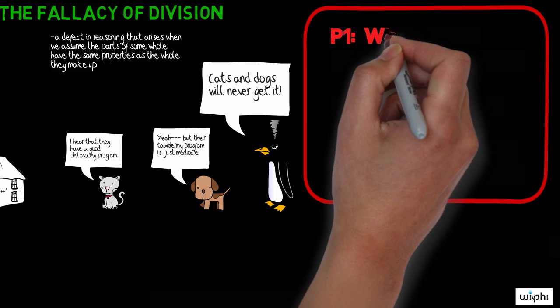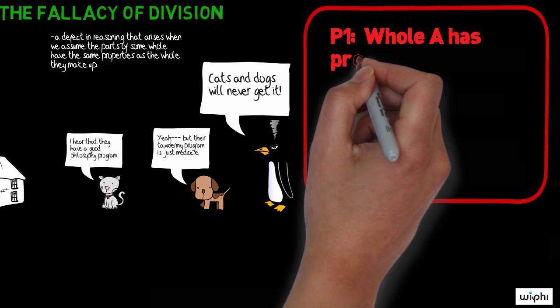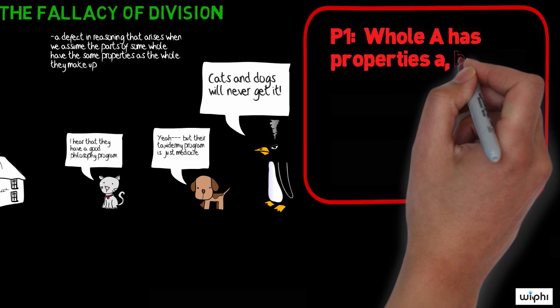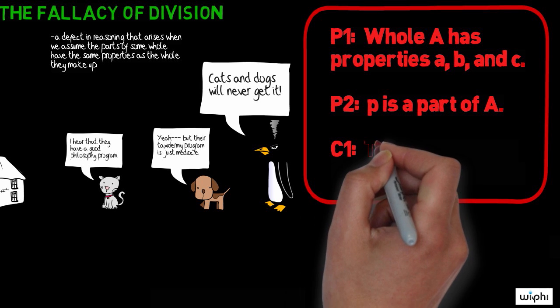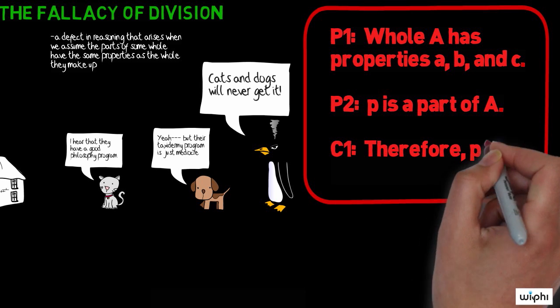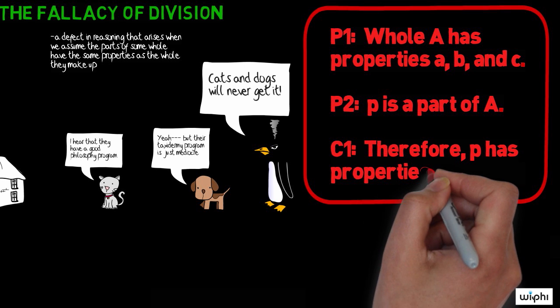Premise one: whole A has properties A, B, and C. Premise two: P is a part of A. Conclusion: Therefore, P must have properties A, B, and C.